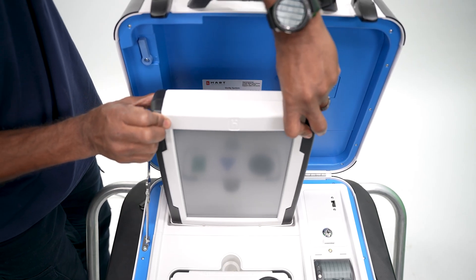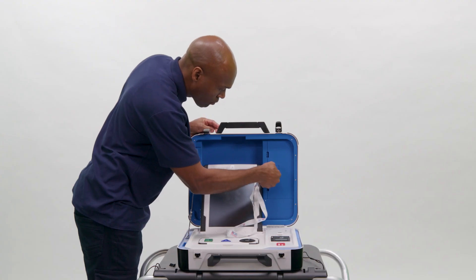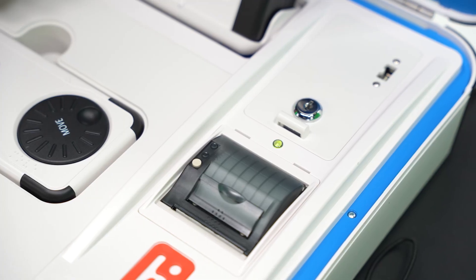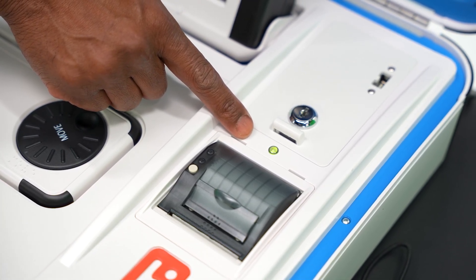Seat the tablet in the cradle, tilt it back and lock it in place with the blue key. Verify that the light above the report printer is green to indicate that the tablet is seated properly.